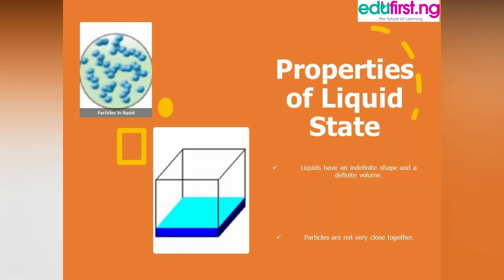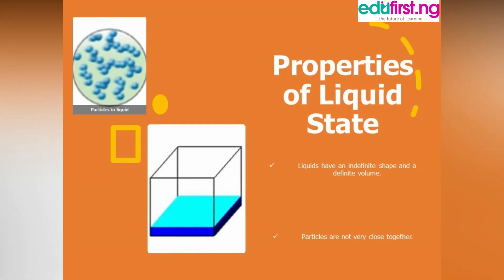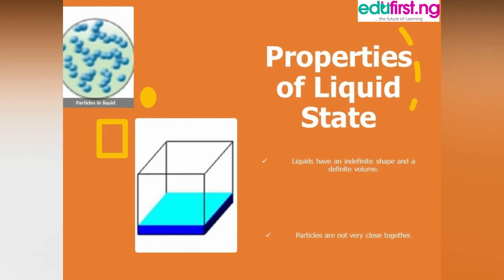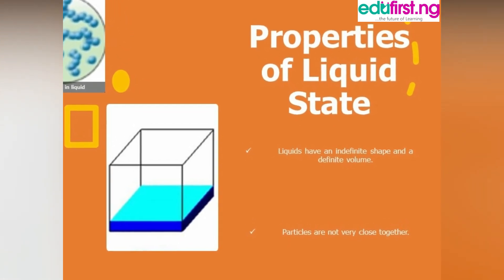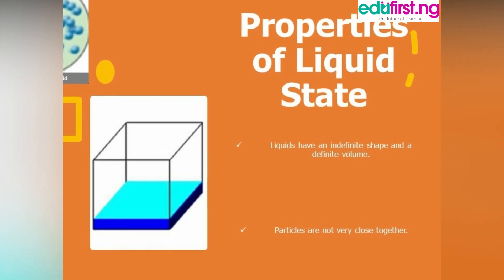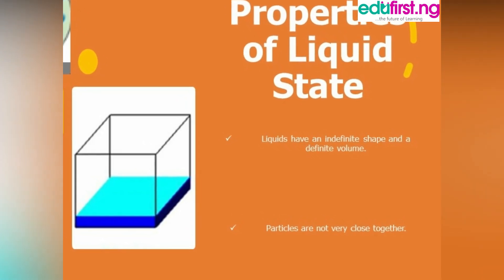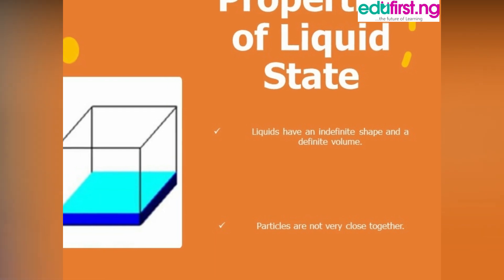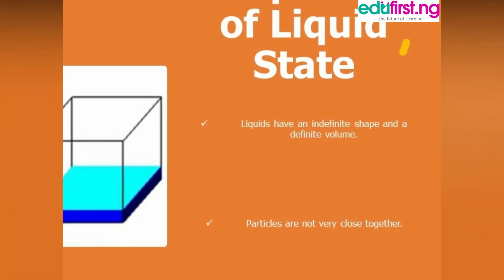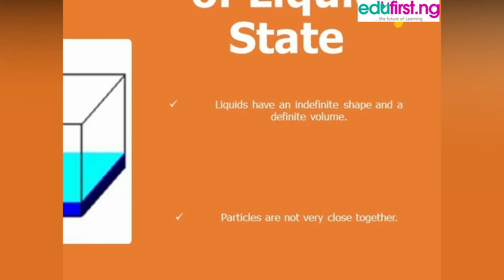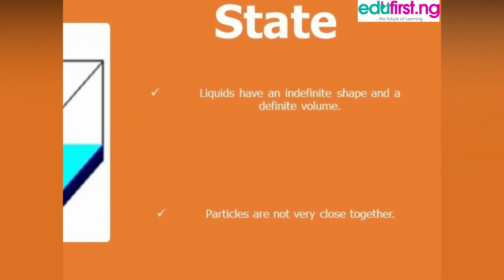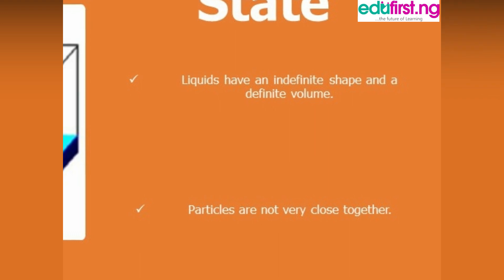Now, properties of liquids. One, liquids have an indefinite shape, meaning that the shape of a liquid depends on the container. Two, a definite volume — it also has a fixed volume as that of solid. Three, particles are not very close together when compared to the solid state.